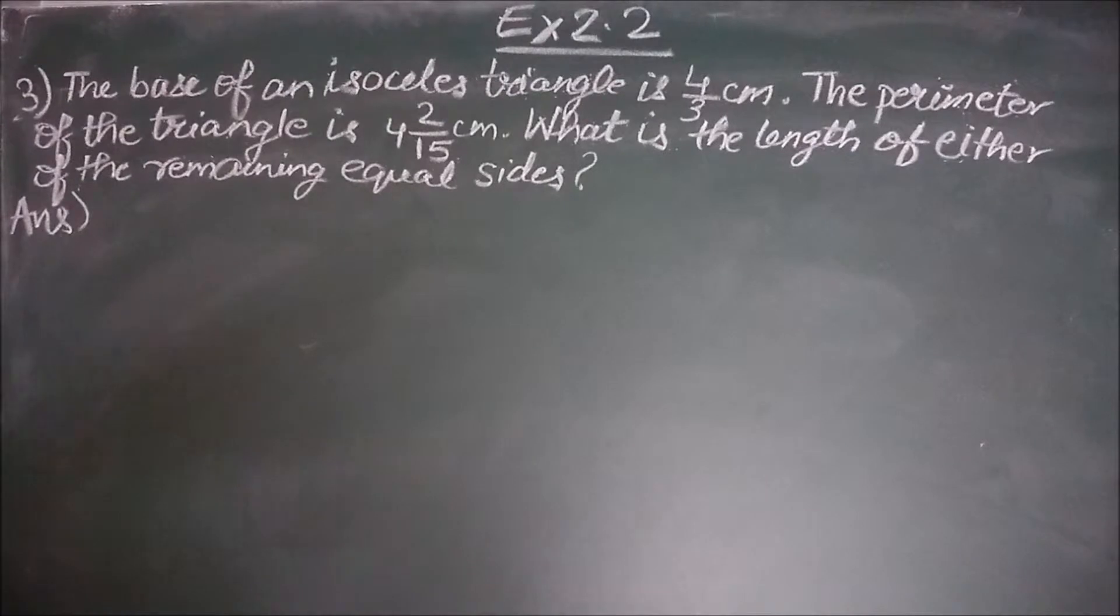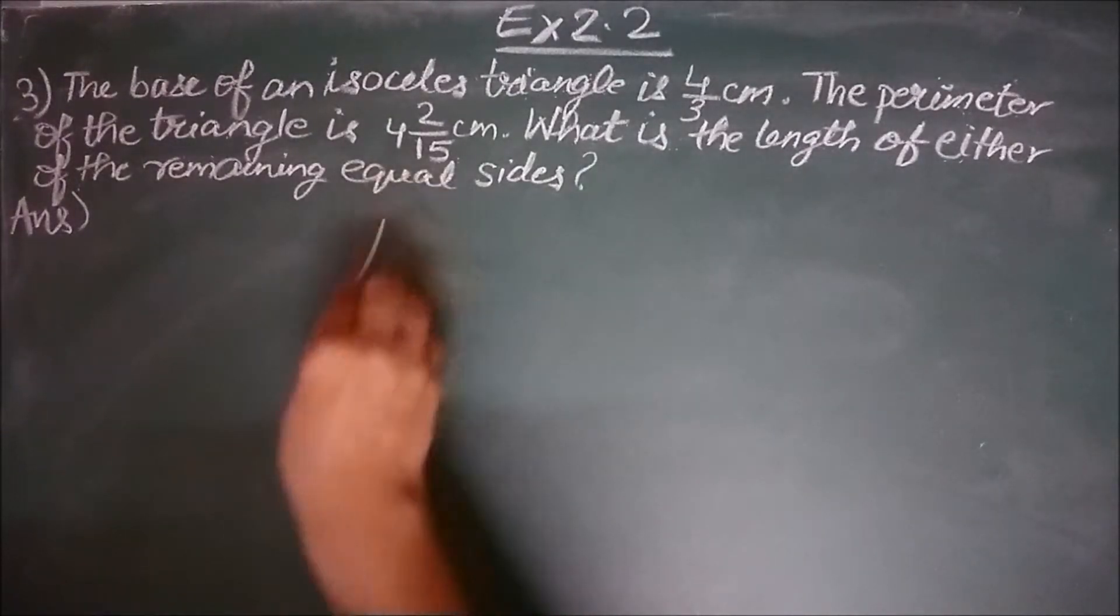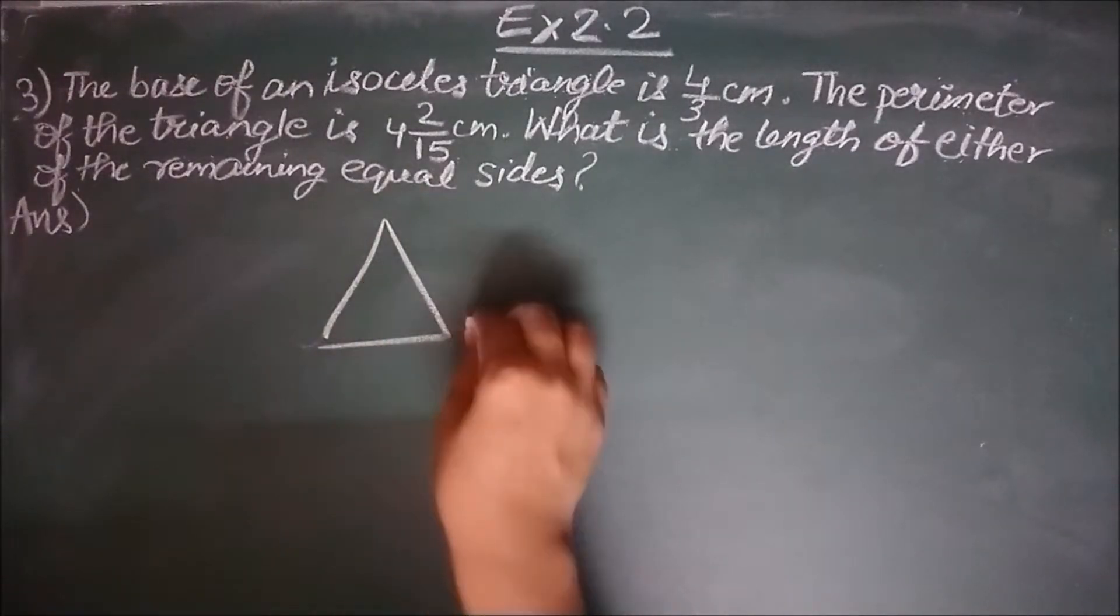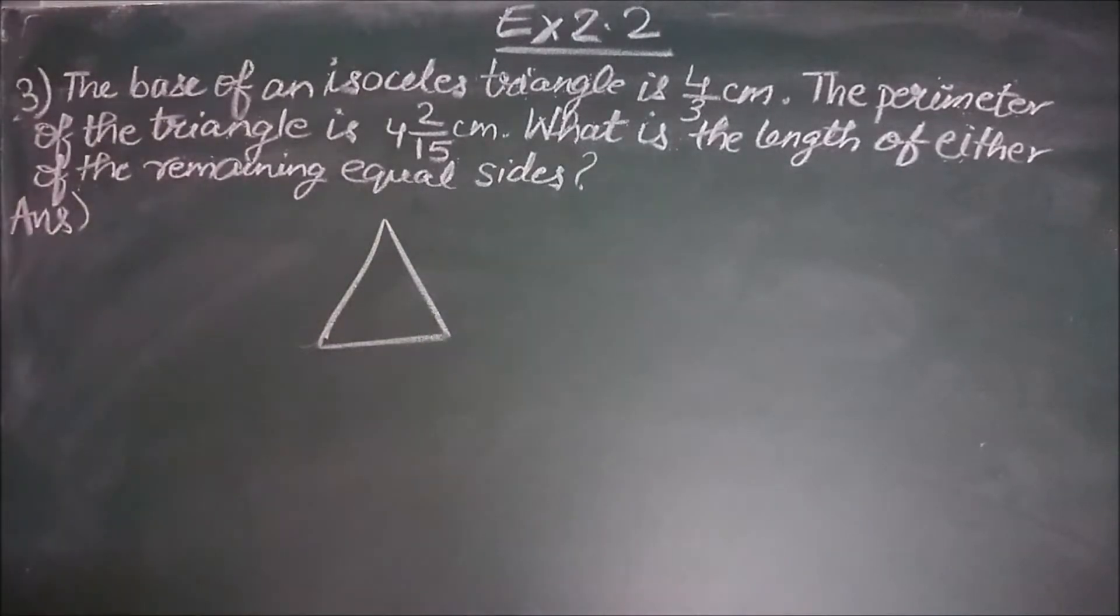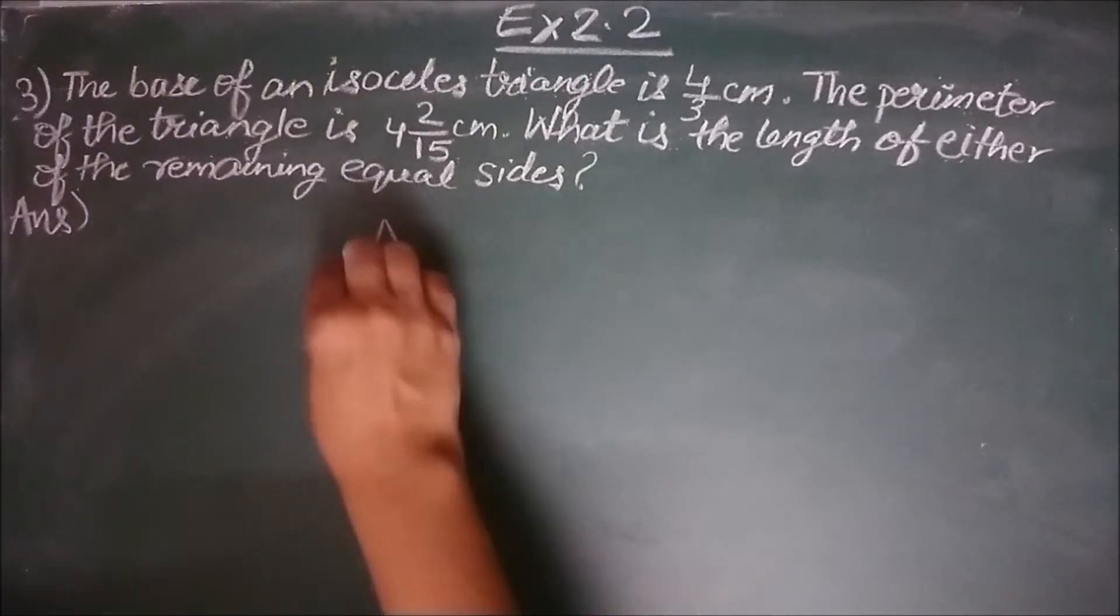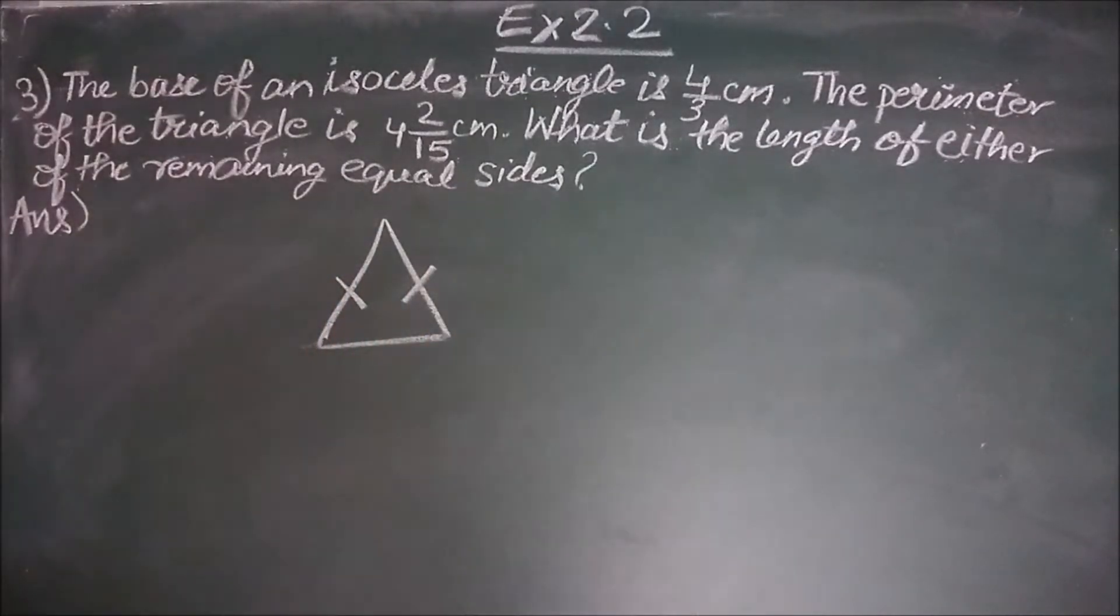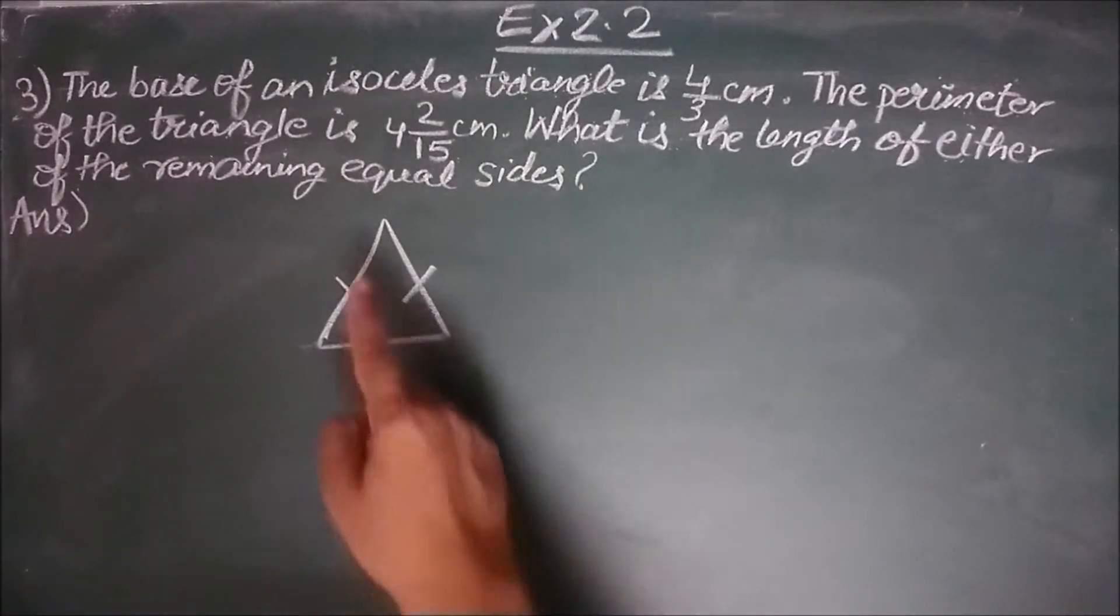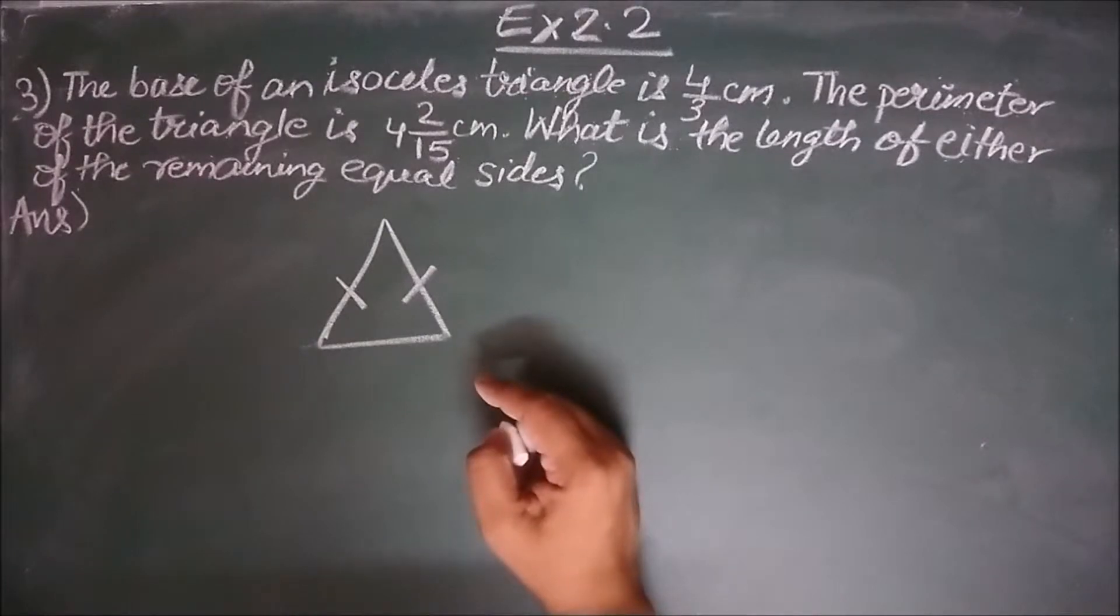So here we are talking about an isosceles triangle. What is an isosceles triangle? A triangle whose any two sides are equal is called an isosceles triangle. Let us suppose in this triangle, these two sides are equal. So this is an isosceles triangle. Both will have same length.